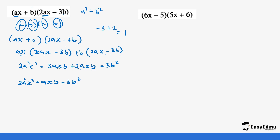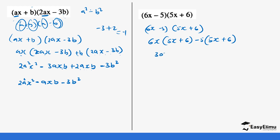The same applies to the next question — I would advise you to just open it completely. So (6x minus 5)(5x plus 6): 6x into bracket (5x plus 6) minus 5 into bracket (5x plus 6). This gives 30x squared plus 36x minus 25x minus 30. Collecting like terms: 30x squared plus 11x minus 30. You see how you get totally different values when they are mixed up.